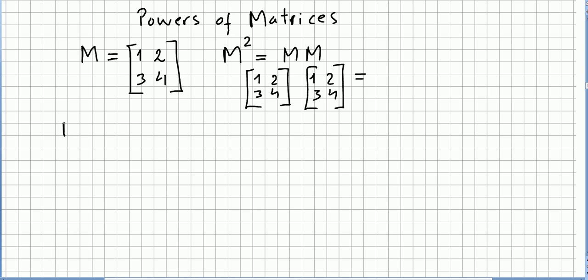Now some definitions. M to the power of 0 is equal to the identity matrix. And obviously M to the power of 1 will be the matrix itself.